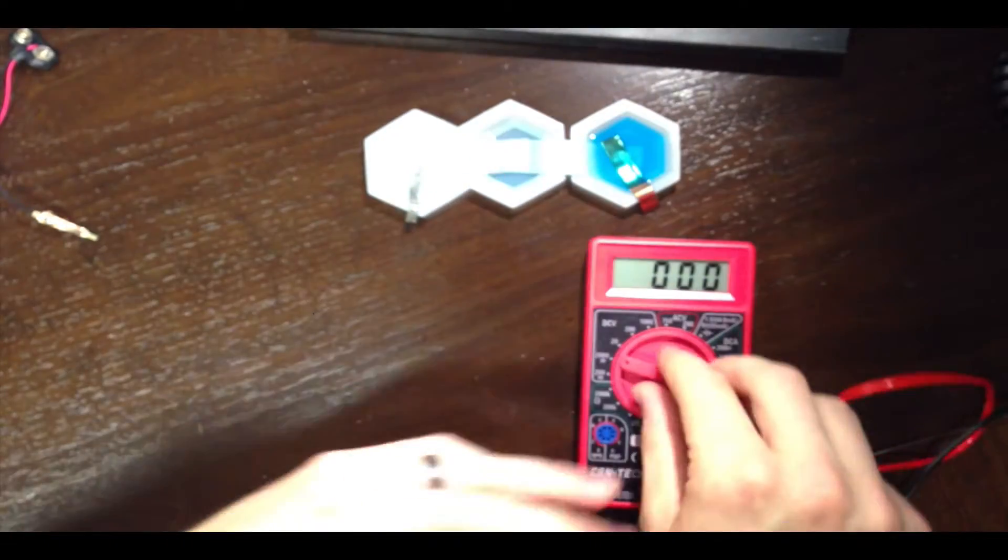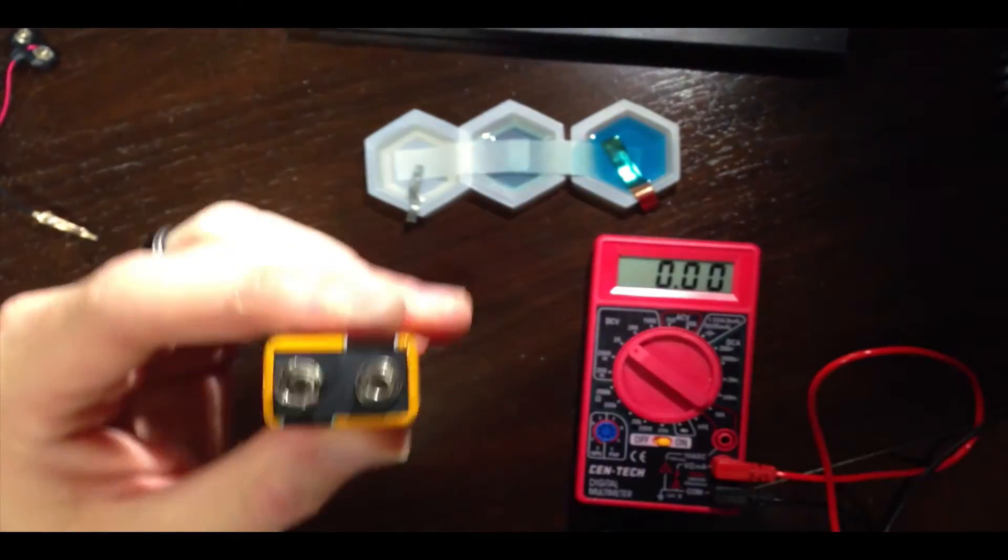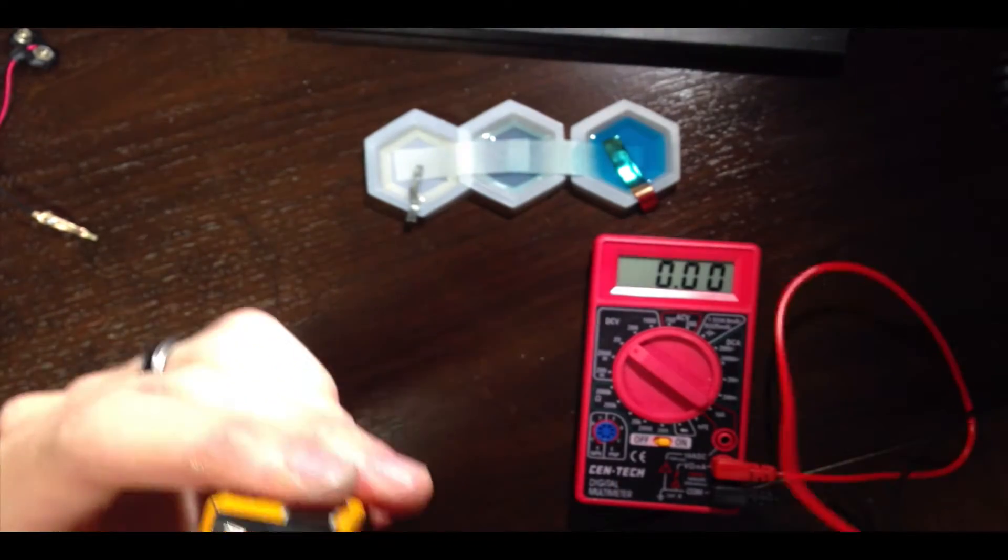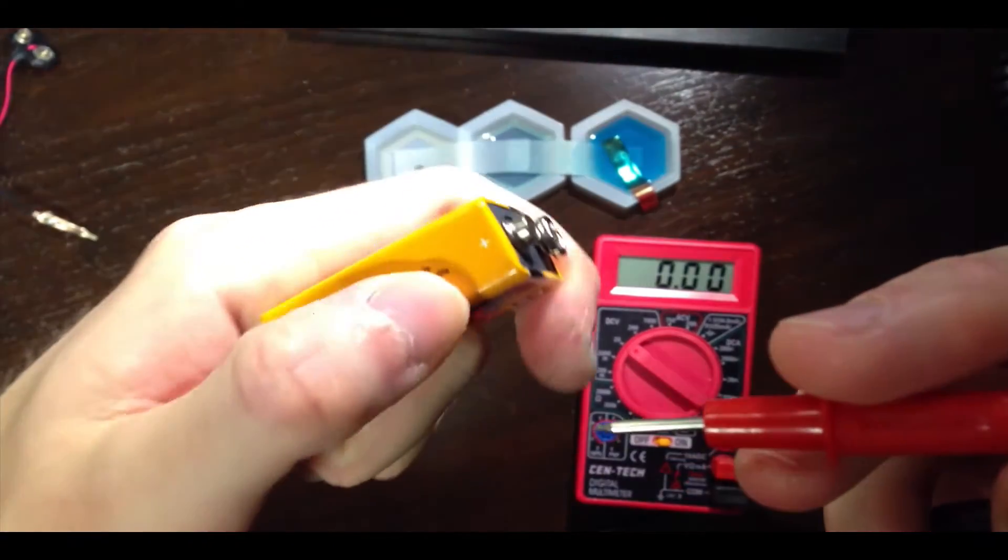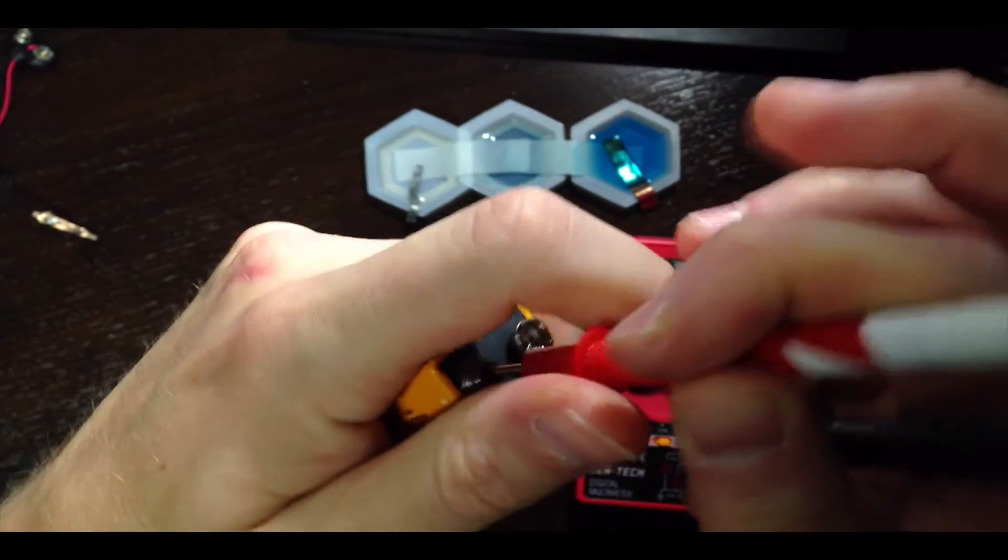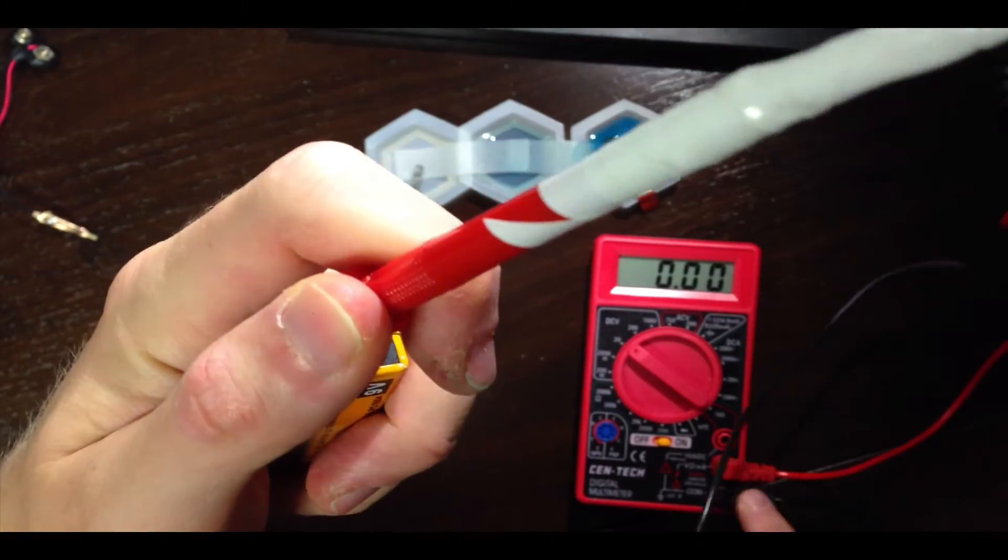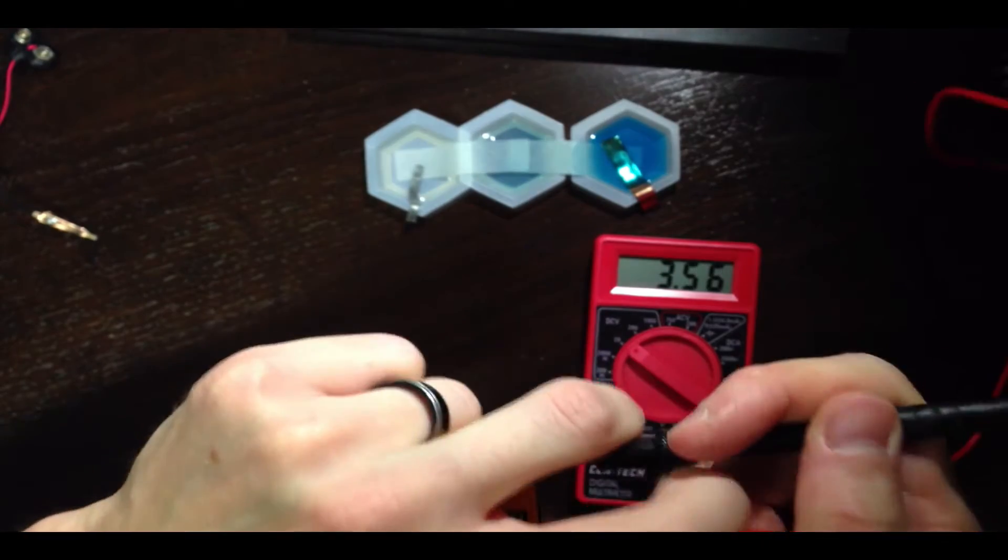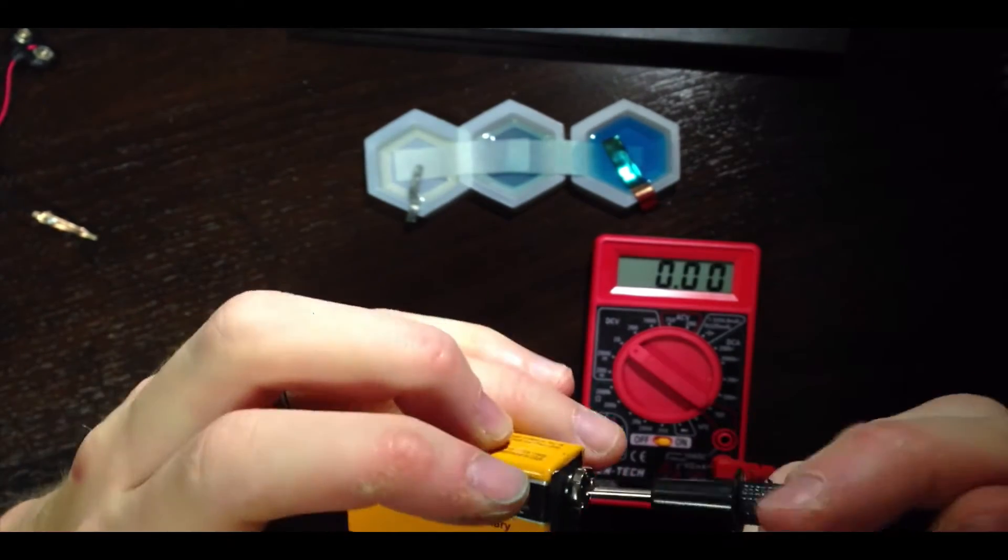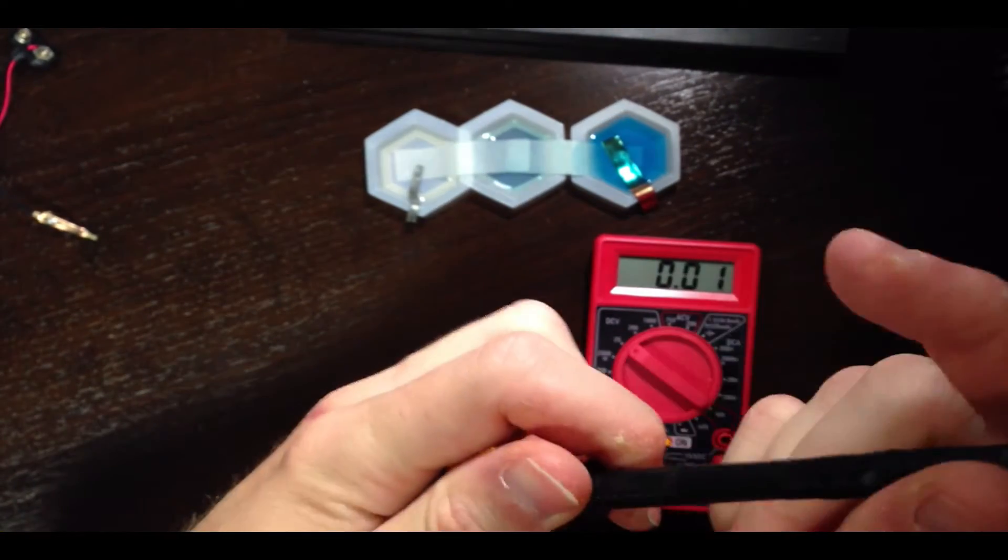To observe a positive voltage here on the multimeter, we want to make sure to connect the leads in the proper configuration. What we want to do is connect the positive lead of the multimeter to the cathode, or positive terminal of the battery, and the negative, or common lead of the multimeter to the negative terminal of the battery. When we do that, as you can see, we're observing a positive voltage.